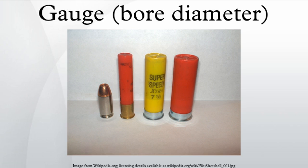Since shotguns were not originally intended to fire solid projectiles, but rather a compressible mass of shot, the actual diameter of the bore can vary. The fact that most shotgun bores are not cylindrical also causes deviations from the ideal bore diameter. The chamber of the gun is larger to accommodate the thickness of the shot shell walls, and a forcing cone in front of the chamber reduces the diameter down to the bore diameter.